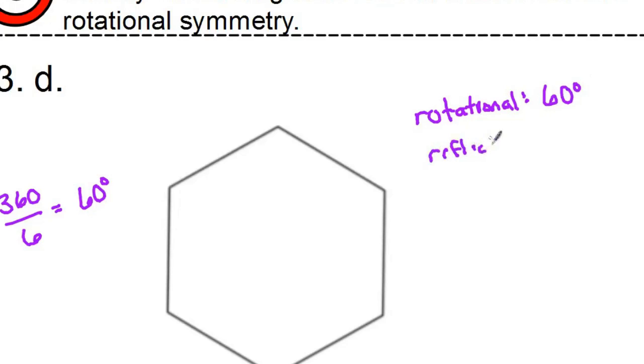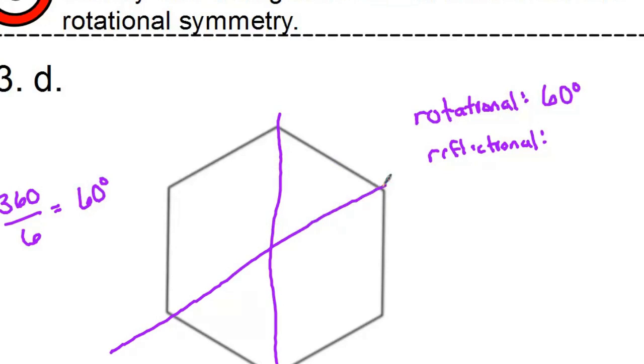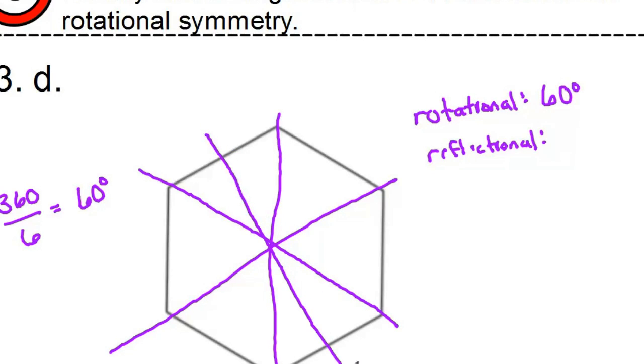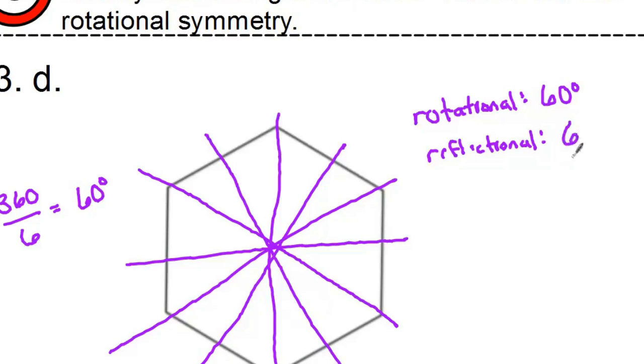For reflectional symmetry, I can definitely go through each of my points here and divide it in half. So there's three lines. I can also divide it in half through each of the flat sides. So there's an additional three lines. So all together, it has six lines of symmetry.